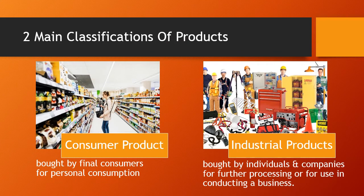Products fall into two broad classes based on the type of consumers who use them. Consumer products are bought by the final consumer for personal consumption; these products differ in the way consumers buy them, and therefore how they're marketed. Industrial products are products purchased for further processing or for use in conducting business.